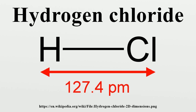Alchemists of the Middle Ages recognized that hydrochloric acid released vaporous hydrogen chloride, which was called marine acid air. In the 17th century, Johann Rudolf Glauber used salt and sulfuric acid for the preparation of sodium sulfate, releasing hydrogen chloride gas. In 1772, Carl Wilhelm Scheele also reported this reaction. Joseph Priestley prepared hydrogen chloride in 1772, and in 1810 Humphry Davy established that it is composed of hydrogen and chlorine.